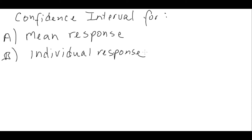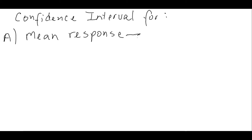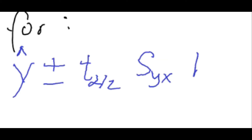Let's start with A, the confidence interval for a mean response. The formula is y-hat plus and minus t of alpha divided in half, times syx — that's the standard error — times the square root of something called h sub i.